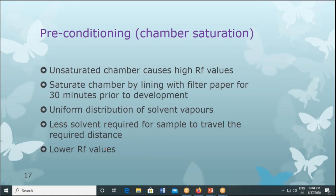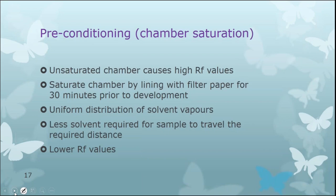In an unsaturated chamber, the solvent front evaporates into the atmosphere and does not proceed at a fast rate, while samples move faster and come close to the solvent front, giving higher RF values — since RF is the distance traveled by the sample divided by the distance traveled by the solvent front. When the solvent travels a longer path carrying the samples, the denominator is larger and RF values are lower. The twin-trough chamber allows filling small amounts of solvent into each trough, and two plates can be run independently.